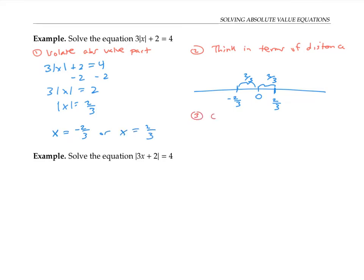I can check my answers by plugging in. Three times the absolute value of negative two thirds plus two, I need to check if that equals four. Well, the absolute value of negative two thirds is just two thirds. So this is three times two thirds plus two, which works out to four. Similarly, if I plug in positive two thirds, it also works out to give me a correct answer.